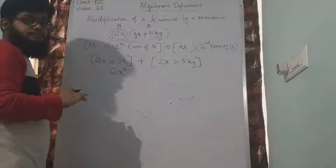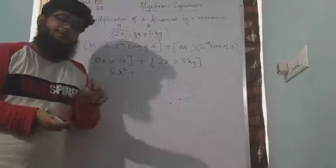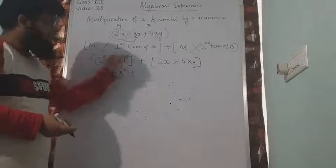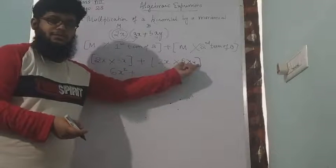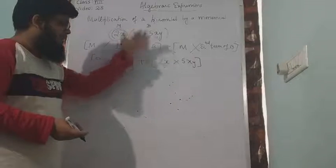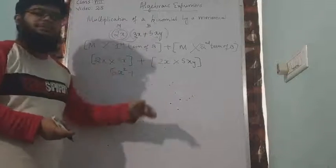You have learnt that topic, first topic, which is monomial with the monomial. Now if you actually see this step, monomial, monomial, we have already learnt. This is also a monomial and a monomial. So monomial with the binomial when we are doing, we are actually reducing it to monomial multiplication only.